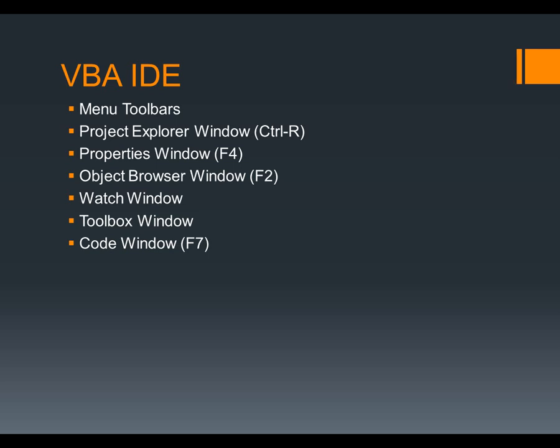We will go through that. We are also going to see how the Object Browser window works — what we can see from this window, which includes all of the objects and their respective properties, methods, and events.